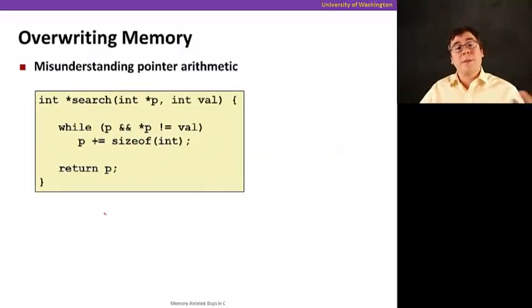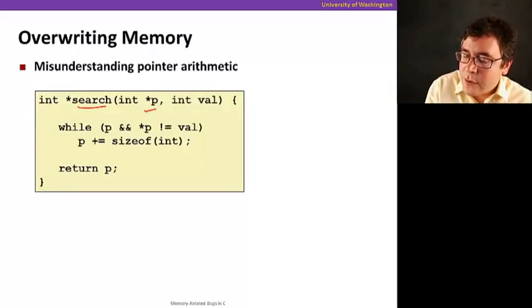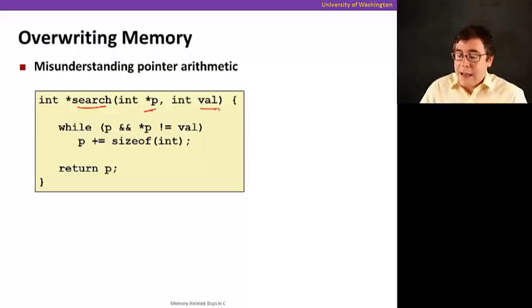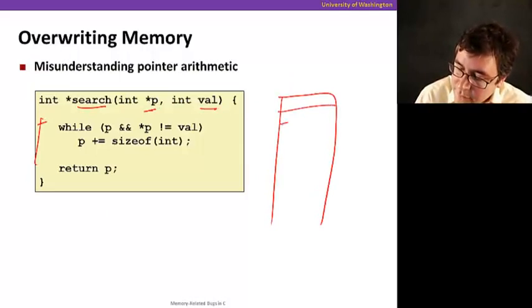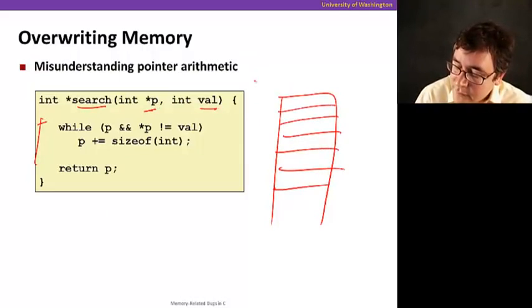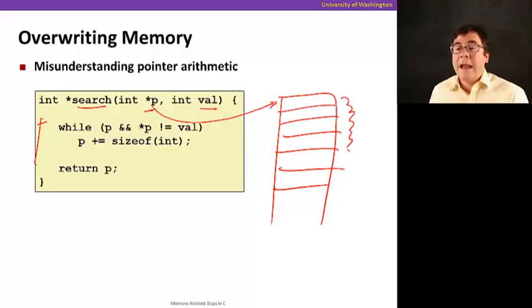So you might also overwrite memory by simply misunderstanding pointer arithmetic. For example, if you have a function called search, and you pass as a parameter a pointer p, pointer to int, and a value val. And this loop here, so this is going to be, we're going to have an array of ints in memory, and p points to the first element, and then this loop is going to traverse this, and look at each one to see whether it matches val.